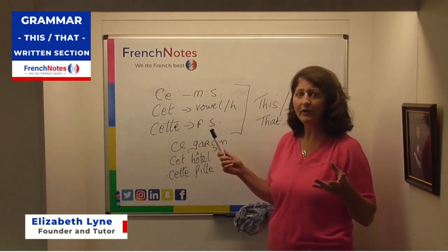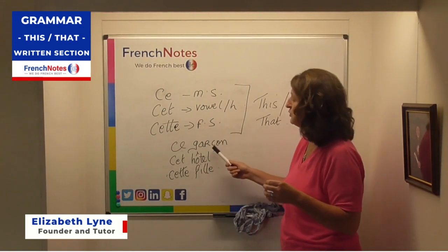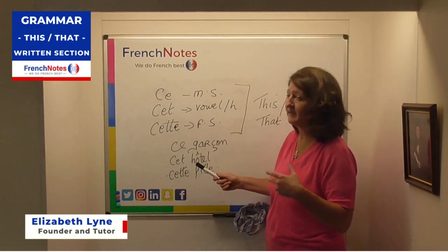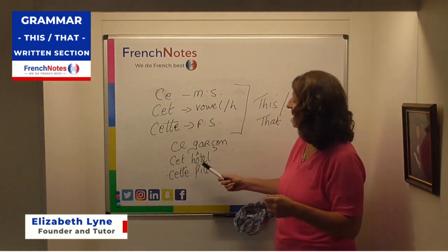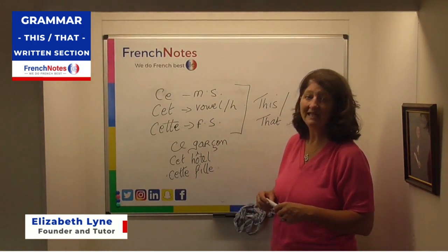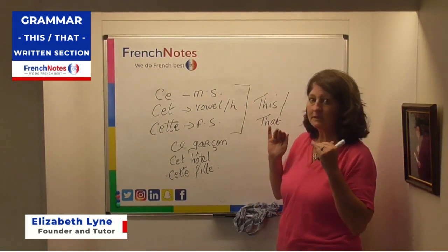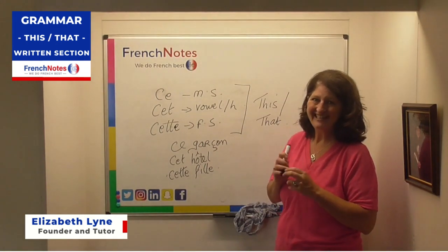So very simply what does it mean? It means ce garçon, this or that boy, because boy is masculine and singular. Cet hôtel because it begins with a silent h, and cette ville because it's feminine. Really easy, but it's so important that you get it right. Merci beaucoup.